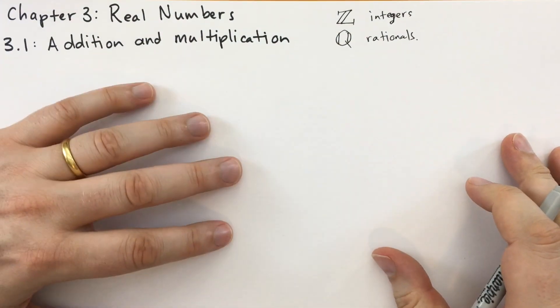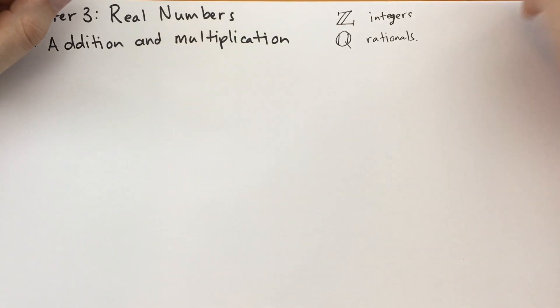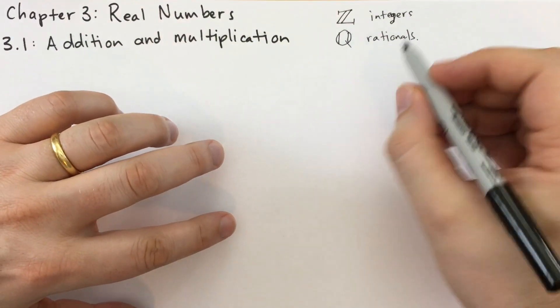So if you recall, we were studying the properties of addition and multiplication, and we discovered that for integers, there's no multiplicative inverse. And so we introduced the rationals, but then we discovered with the rationals, there's a problem when we try to do things like the square root of two and stuff like that. So now we are in the reals.